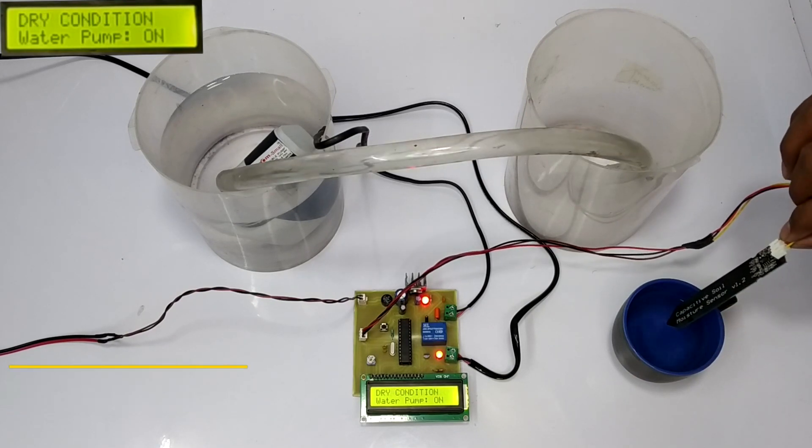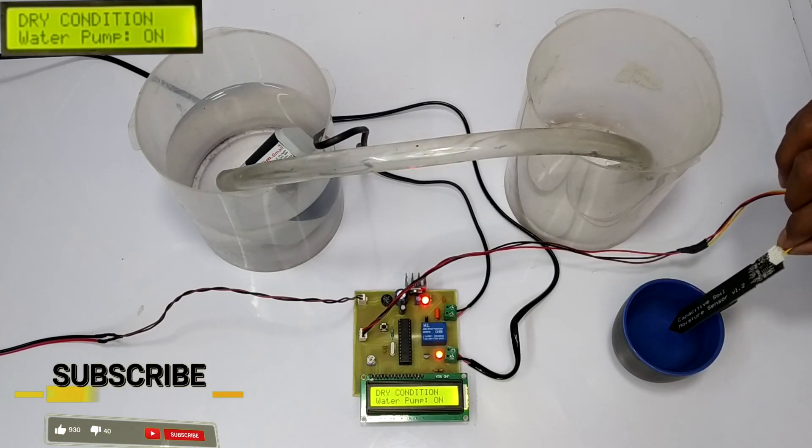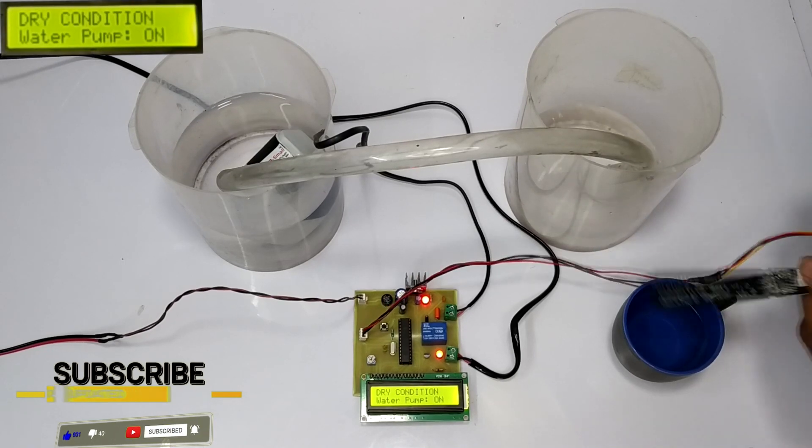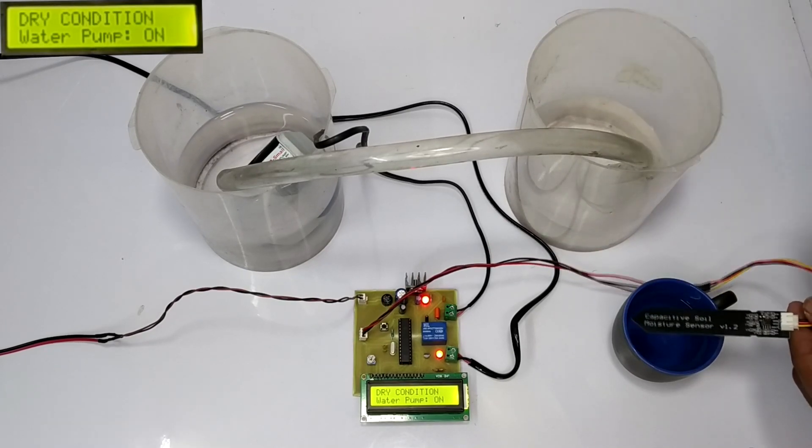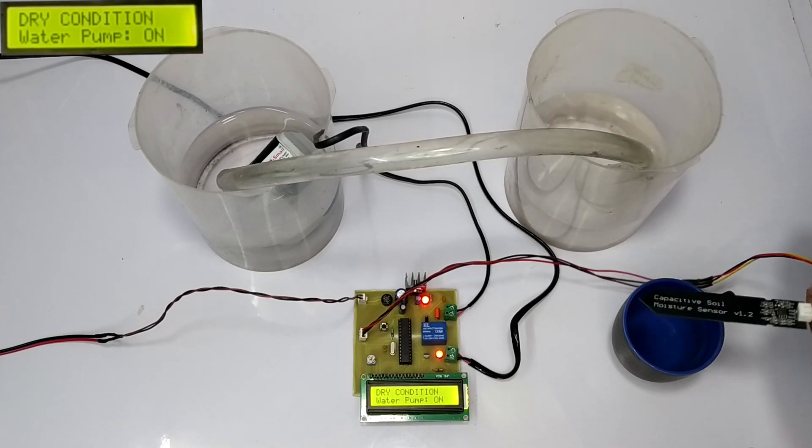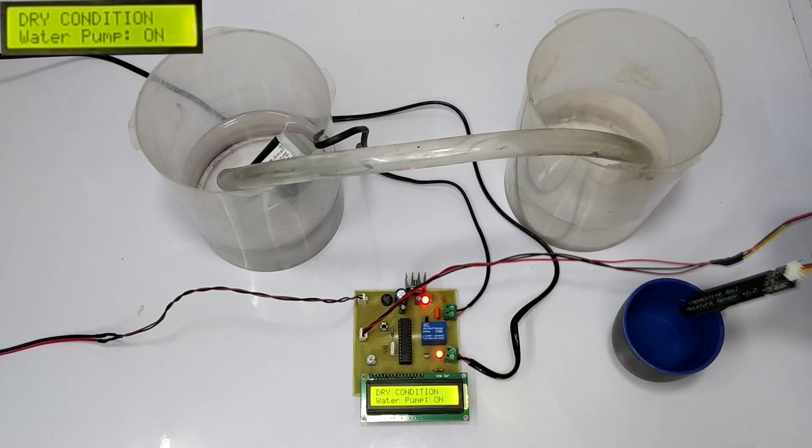As we pull the soil moisture sensor out of the water, the LCD will indicate dry condition and the pump will turn on. The pump gets turned on and passes the water to the soil to restore the moisture content in the soil.